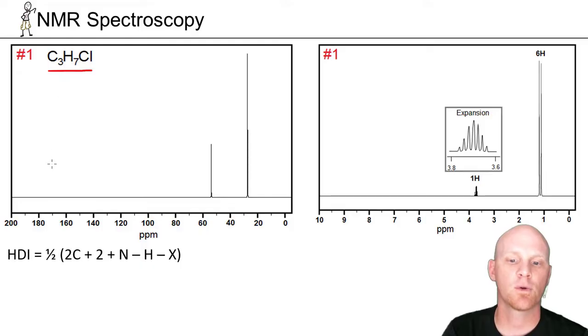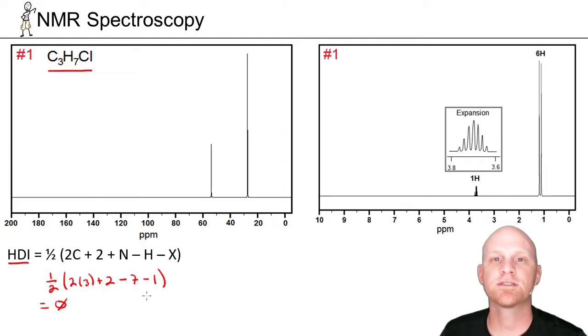The first thing you should do if you have a molecular formula is calculate what are called the degrees of unsaturation or the hydrogen deficiency index here. In this case, we're going to take one-half of 2 times the number of carbons, so 2 times 3, plus 2, plus no nitrogens. And in this case, minus 7 hydrogens. And then X here is halogens, minus 1 halogen.